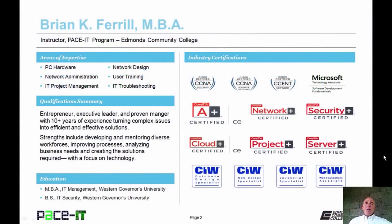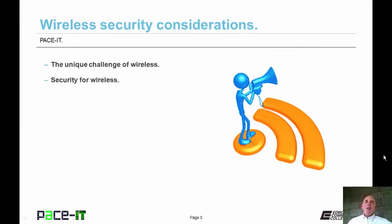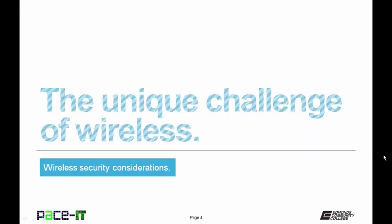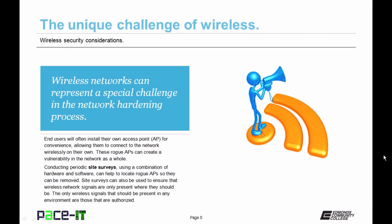Good day, I'm Brian Farrell, and welcome to Pace IT's session on Wireless Security Considerations. Today we're going to be discussing some of the unique challenges of wireless networks, and then we're going to move on to security for wireless. Wireless networks can represent a special challenge in the network hardening process. One of the main tenets of network security is hiding your traffic — with wireless, it's impossible to hide your traffic because it flows over the airwaves, so with the proper equipment, anybody can see that traffic.